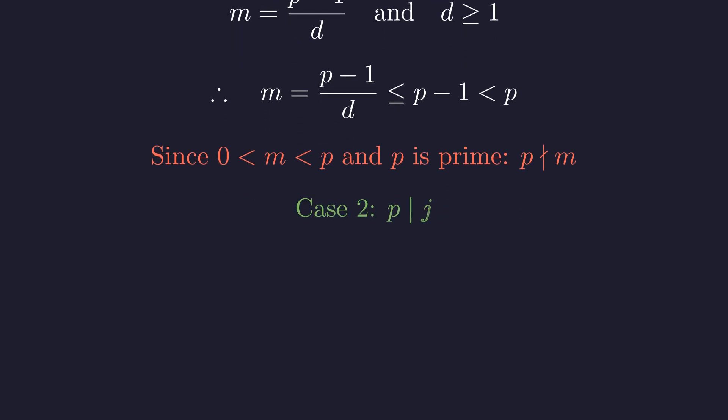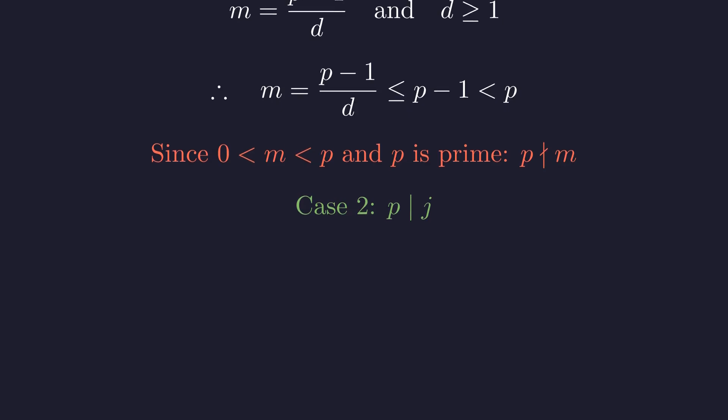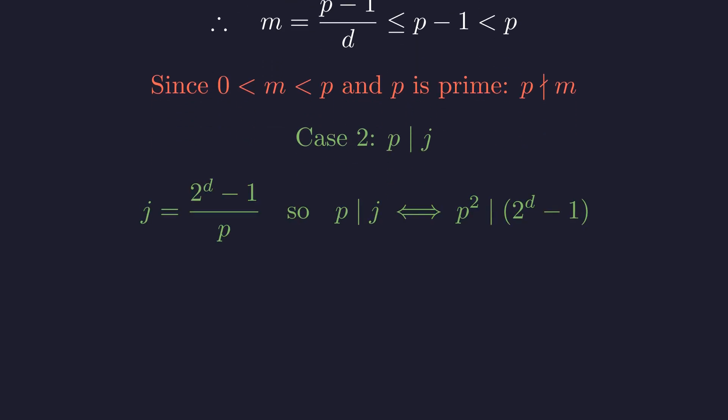This leaves only case 2. p must divide j. Remember that j equals 2 to the d minus 1 divided by p. So p divides j if and only if p squared divides 2 to the d minus 1.